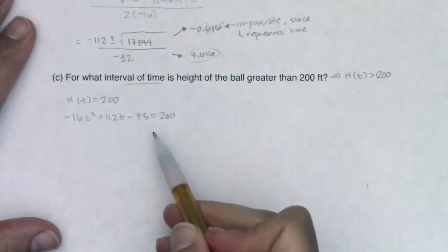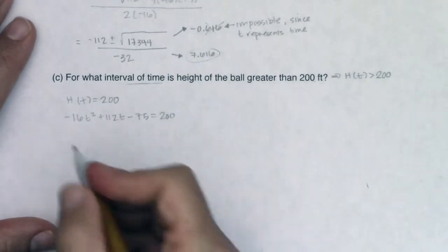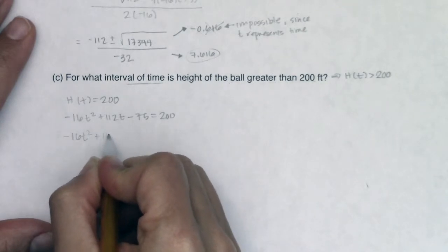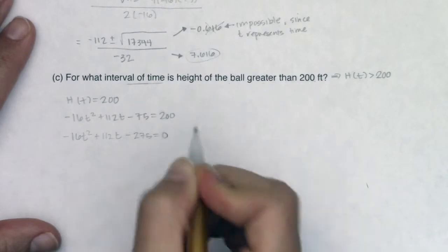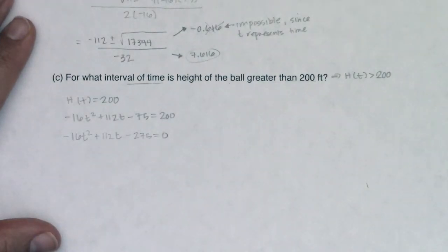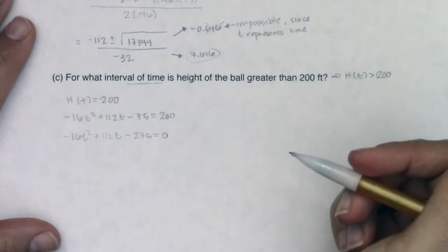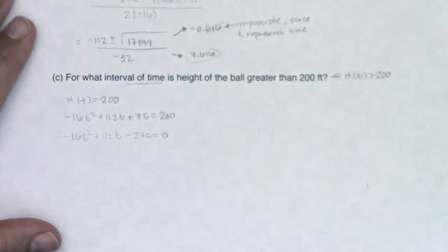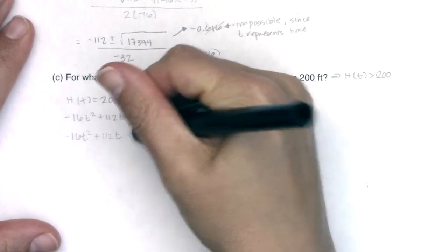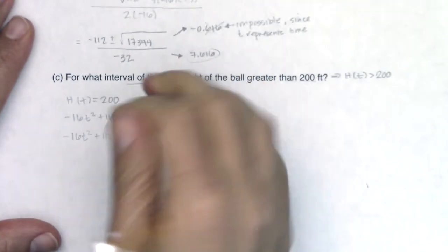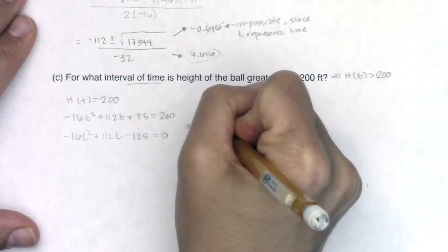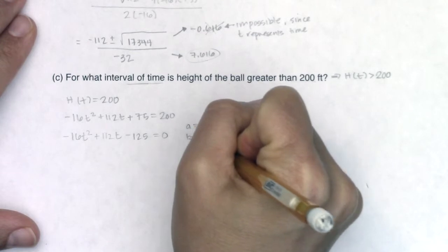When is negative 16t squared plus 112t plus 75 equal to 200? I'll use the quadratic formula. Subtracting 200 from both sides: negative 16t squared plus 112t minus 125 equals zero. So for this problem, a equals negative 16, b equals 112, and c equals negative 125.